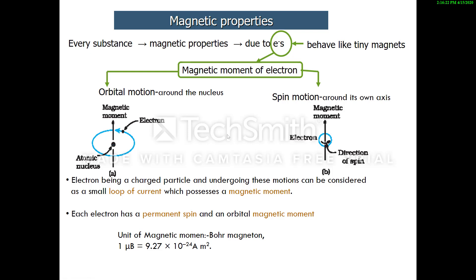Today we'll discuss the last topic of the chapter solid state — magnetic properties. Every substance has magnetic properties, and these are due to the presence of electrons. Each electron behaves like a tiny magnet, and this magnetic property is expressed in terms of magnetic moment. The magnetic moment of an electron is due to two types of motions: orbital motion, in which the electron moves around the nucleus, and spin motion.